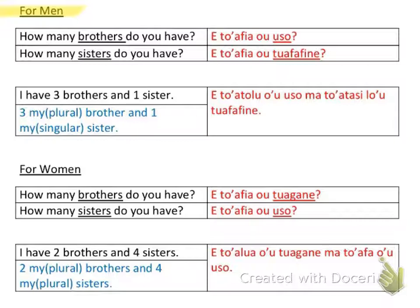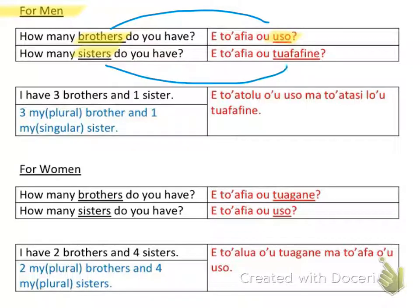If you are a male or if you're talking to a male, this is how they would refer to their brothers or sisters. For males, the equivalent to brother or brothers is 'uso.' So if you're a male, your brother is considered your 'uso,' and your sister is considered your 'tua fafine.'